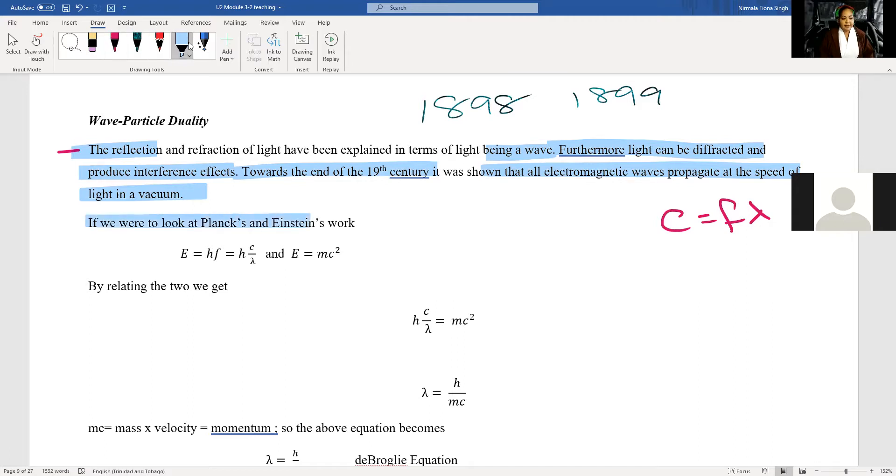You all could go and look up on Maxwell, the physicist Maxwell, who showed that light travels at the speed of light, not just light, any electromagnetic wave travels at the speed of light in a vacuum. Hence why one of our basic equations in this topic is C is equal to F lambda for any electromagnetic wave that exists in a vacuum. C being our speed of light.